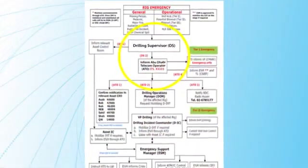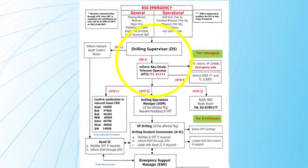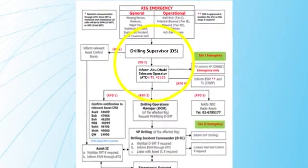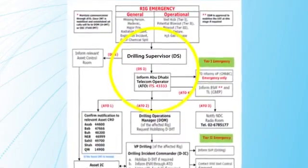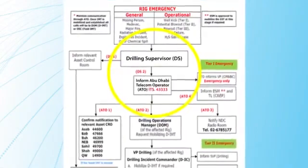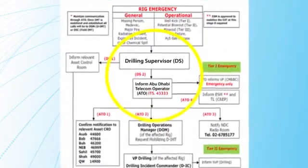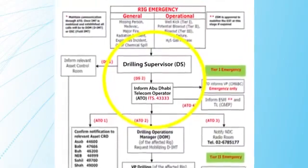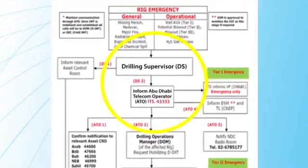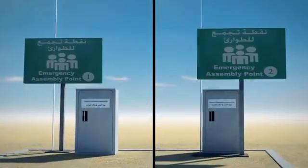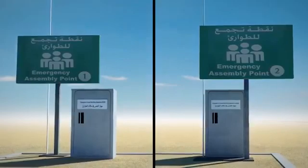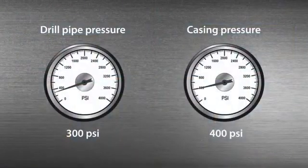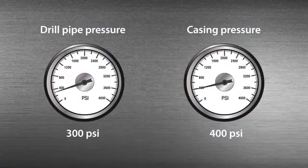Meanwhile at the rig site, the on-scene commander — the ADCO drilling supervisor — will notify the Abu Dhabi telecom operator and relevant asset control rooms, and raise Emergency Tier 1, which activates the appropriate emergency response team. Unnecessary crew will be evacuated to the nearest assembly point. The next step will be to monitor the shut-in drill pipe and the shut-in casing pressure gauges.